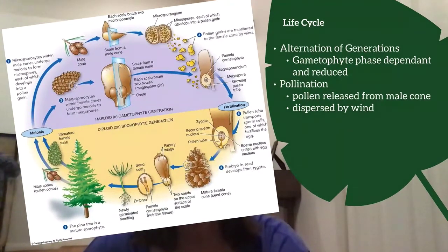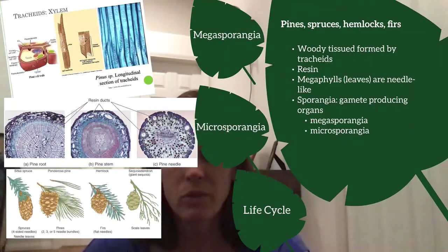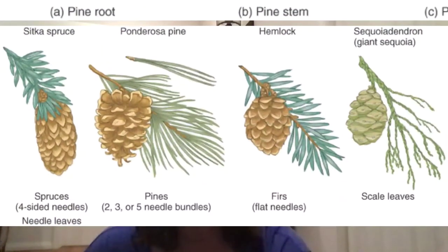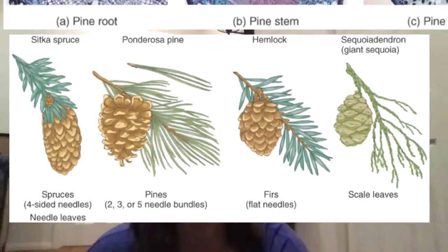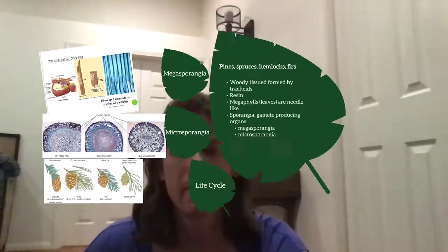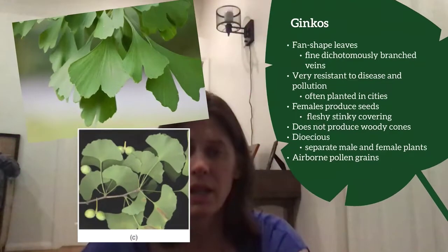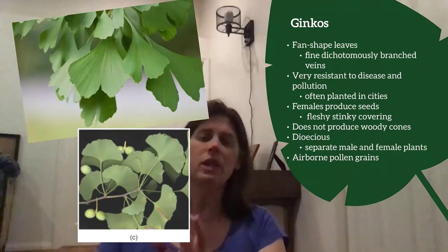Make sure you can reproduce and explain the alternation of generations — not just from memory, but explaining what is happening and how the differences represent adaptations to new environments. Those are our gymnosperms. Those are all female cones you can see there, so make sure you know what a female cone looks like. The next group are ginkgos. We'll only use conifers as the example for life cycle — the rest I just want you to know the characteristics.